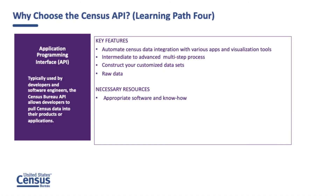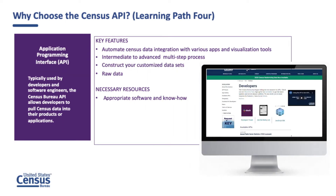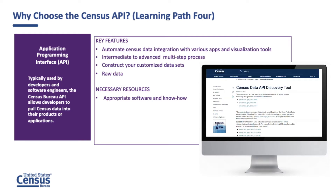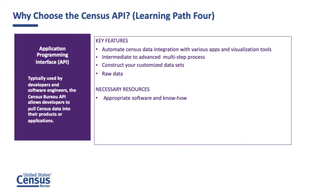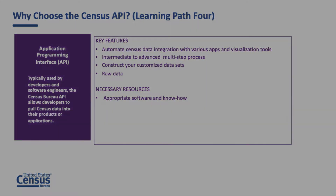The Census API gives the public access to raw statistical data from various Census Bureau data programs. It enables developers to use our API to create and call customized datasets that feed into web or mobile applications. Many of our own Census Bureau tools and applications use our API — data.census.gov is a great example of this.